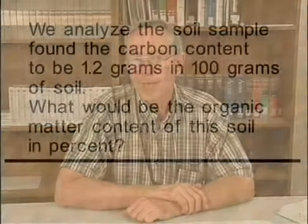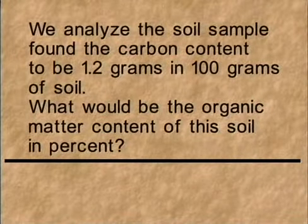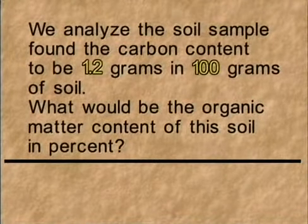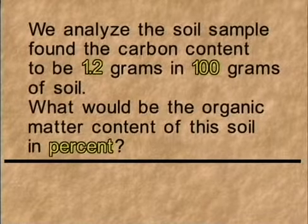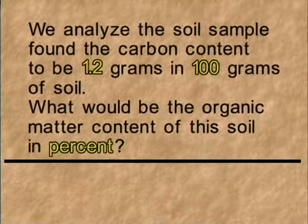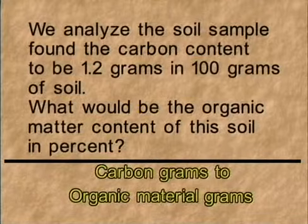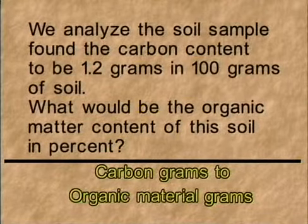Let's see how we did on that practice problem. If we had a carbon content of 1.2 grams in 100 grams of soil, in order to determine the percentage of organic matter, we need to convert grams of carbon to grams of organic material. The conversion factor when going from grams of carbon to grams of organic material is to multiply the grams of carbon by 1.72.